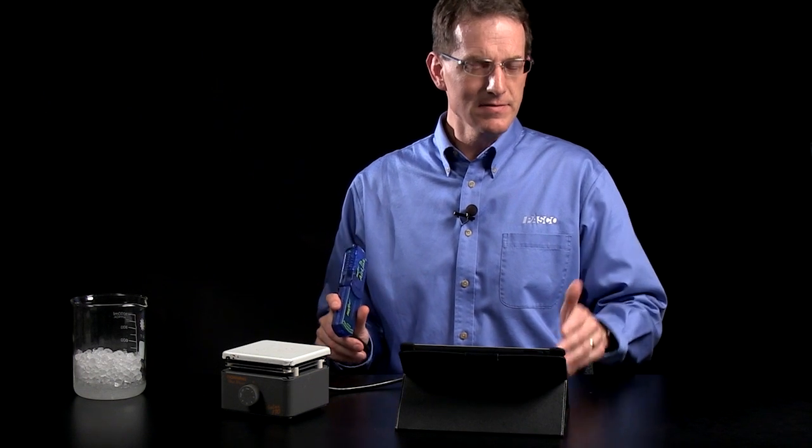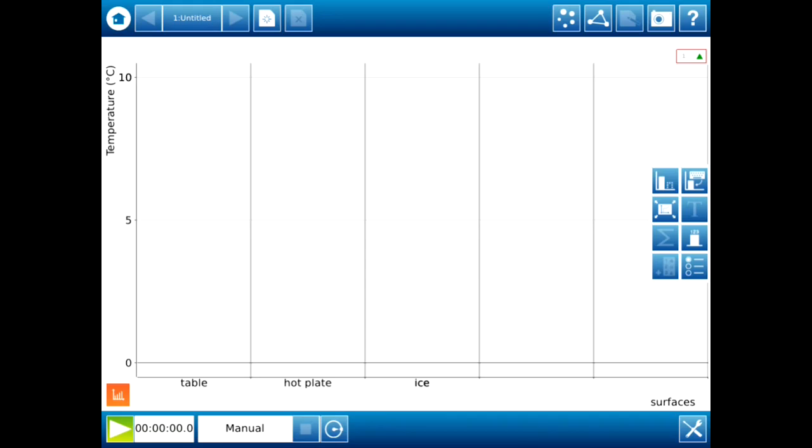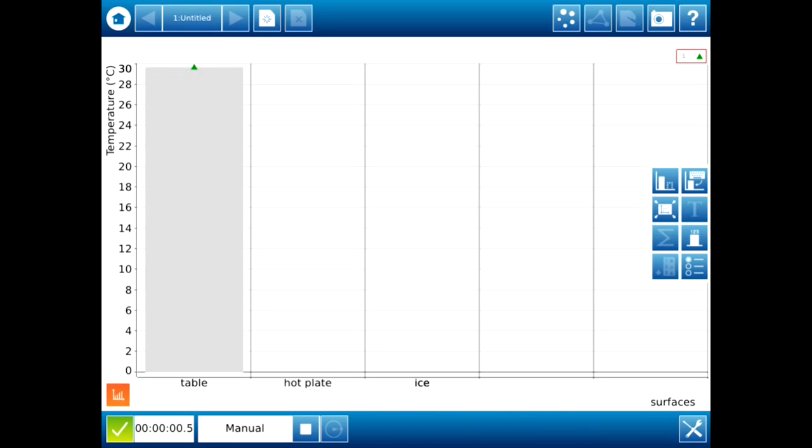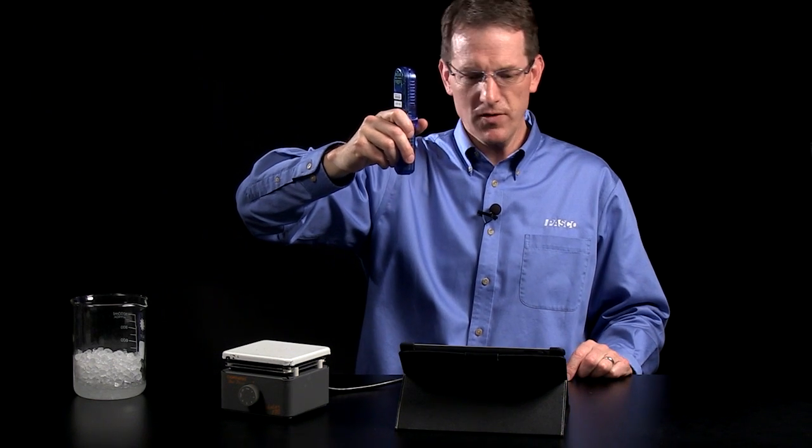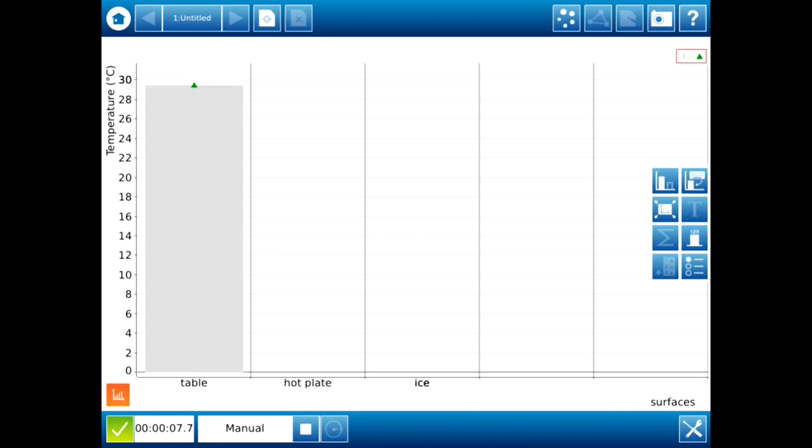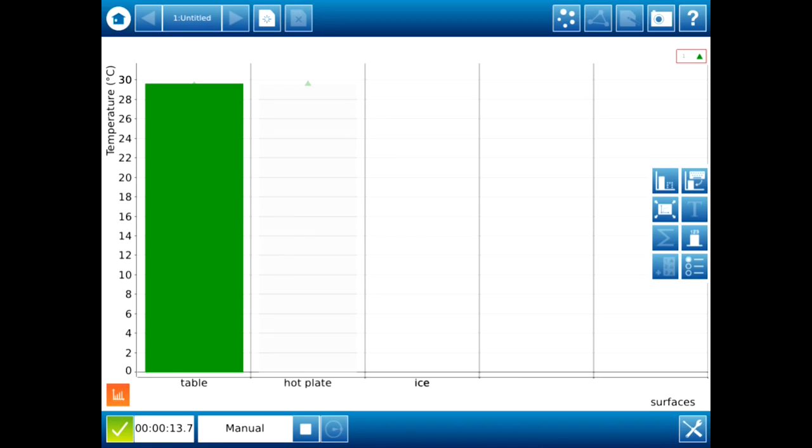To start collecting data, using manual sampling, I'm going to press the Play button in the lower left corner. So I press Go, and you'll notice that it starts a live feed of the temperature. So I'm going to hold it up just a little over a foot or so, and when I'm happy with the value, I see that it's pretty stable, I'm going to press the check in the lower left-hand corner, and then that records the value.